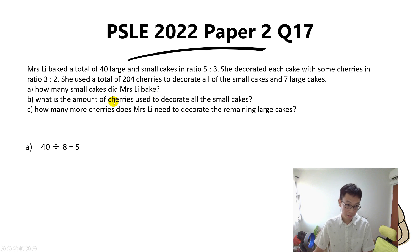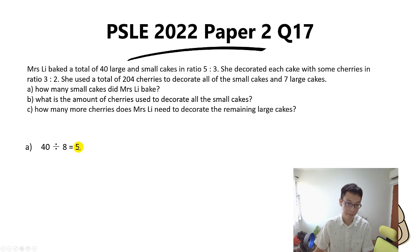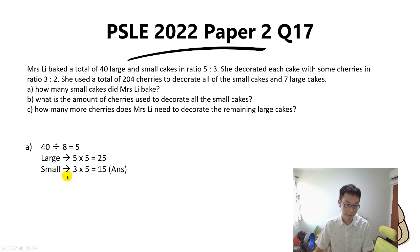Part A is straightforward. To find the number of small cakes, we take 5 units plus 3 units to get 8 units. Since 8 units equals 40, one unit equals 40 divided by 8, which is 5. So large cakes are 5 times 5, which is 25, and small cakes are 3 times 5, giving us 15 small cakes. That's the answer for Part A.